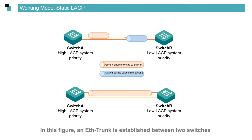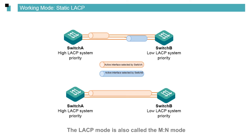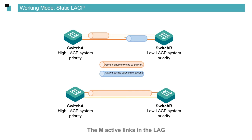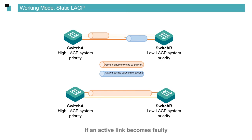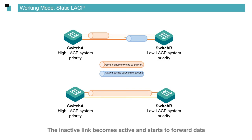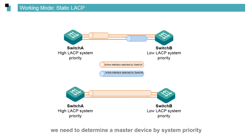In this figure, an ETH trunk is established between two switches and configured with a static LACP working mode. The LACP mode is also called the M-to-N mode, where M indicates the number of active links and N indicates the number of inactive links. The M active links in the LAG (Link Aggregation Group) are responsible for forwarding data and performing load balancing. The N inactive links are standby links and do not forward data. If an active link becomes faulty, the system selects the link with the highest priority from the N inactive links, and that inactive link becomes active and starts to forward data. We need to determine a master device by system priority — the switch with the highest priority is used to determine active links.